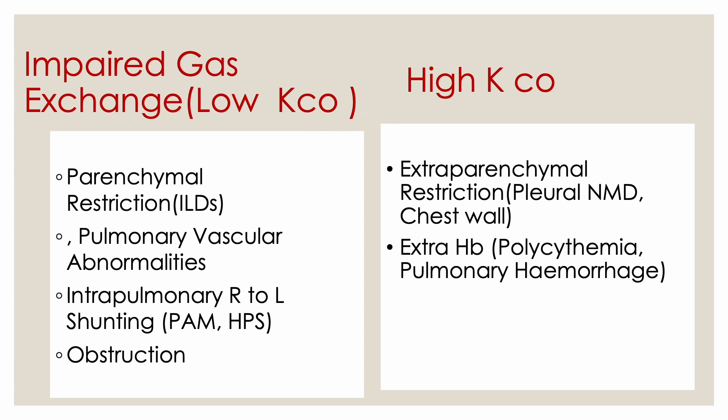KCO may come low when there is parenchymal disease such as ILD, vascular disease, shunting of blood, or severe obstruction. The transfer coefficient may be high when restriction is due to extra-parenchymal effects, or when there is excess hemoglobin. These factors — the transfer coefficient and the alveolar volume — are multiplied together to derive the DLCO.